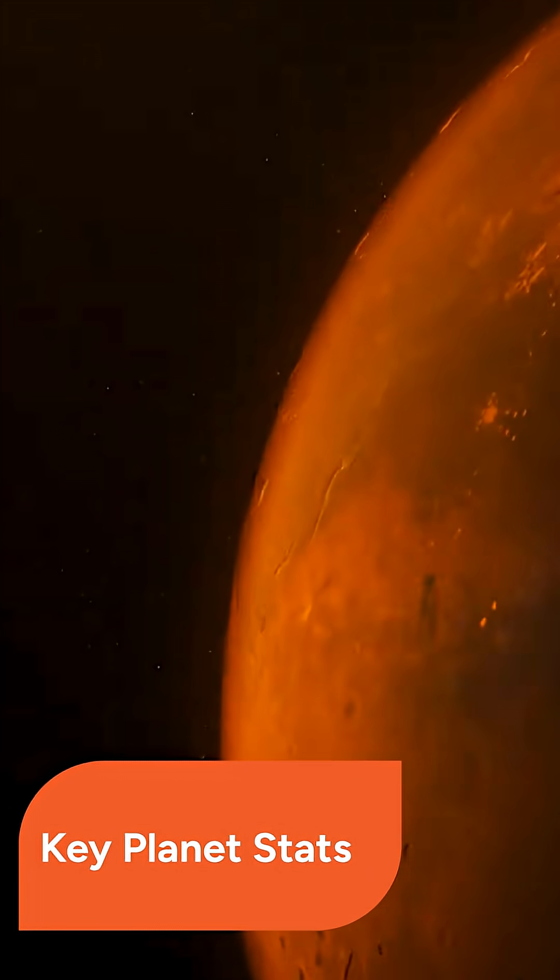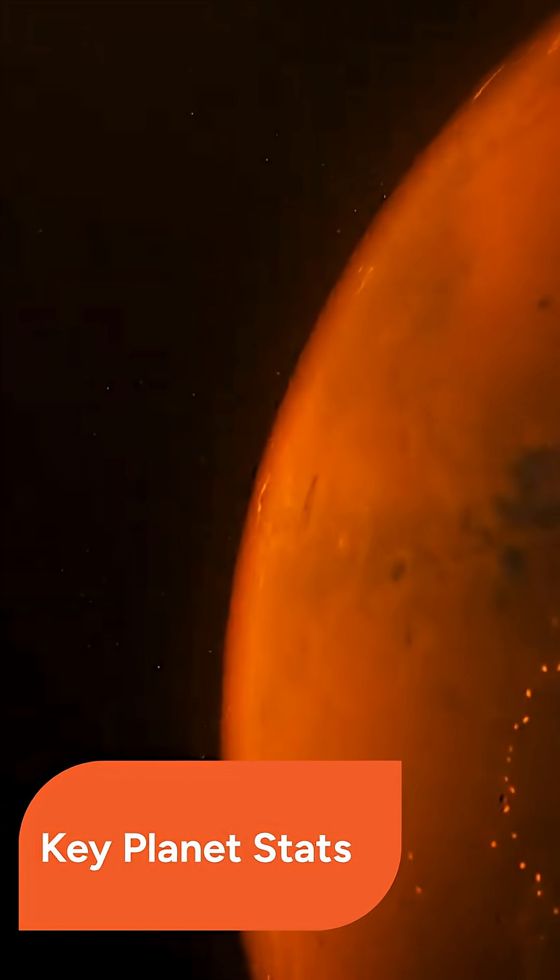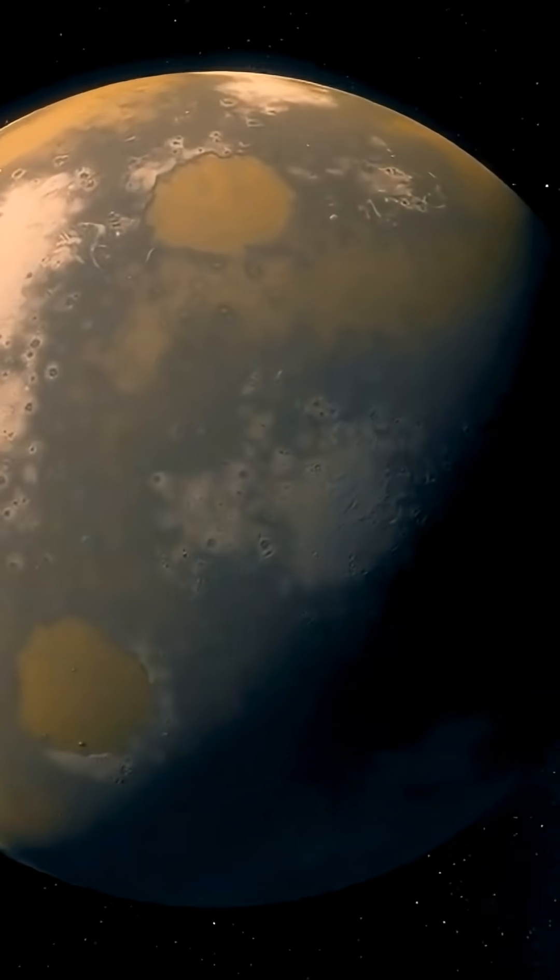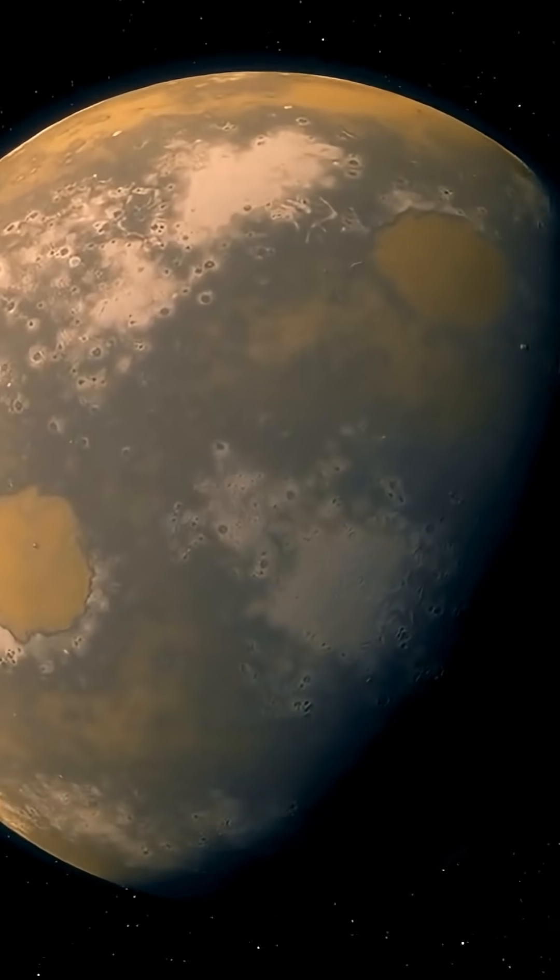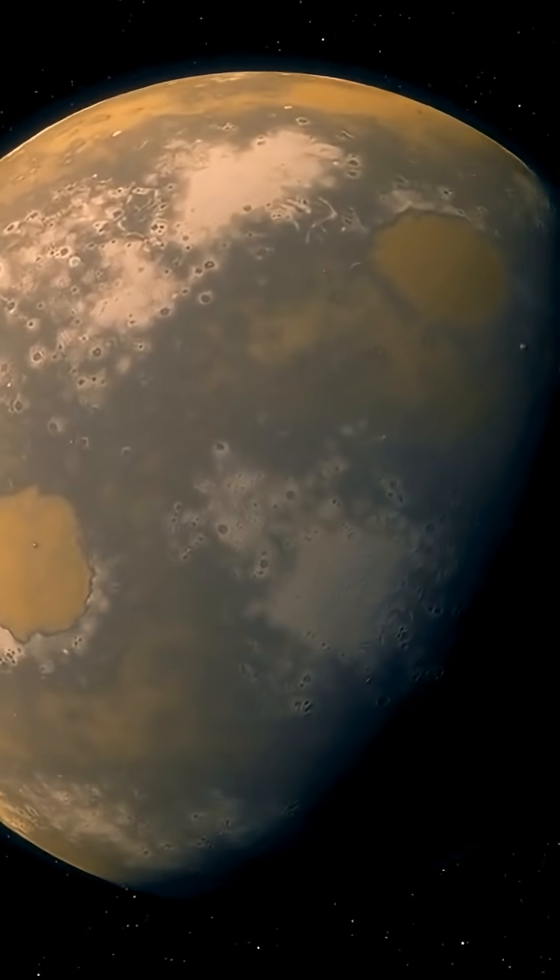TOI 561b is about 1.4 times the radius of Earth and whips around its star with an orbital period of less than 11 hours. It belongs to a rare class of ultra-short period exoplanets and is tidally locked, meaning one side perpetually faces its scorching star.